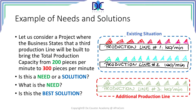Let's have a look at an example of needs and solutions. Consider a factory with the existing situation shown in the blue rectangle. There are two production lines, each producing 100 units per minute. The total capacity of the factory is 200 units per minute. The owner of the factory comes to you, assigns you as project manager and tells you to build a third production line with a total capacity of 100 units per minute. With this solution, the factory will have a capacity of 300 units per minute. As a project manager, the first element to consider is: do I have a need or a solution? In this case, it's very clear — you were offered a solution to address a certain need.